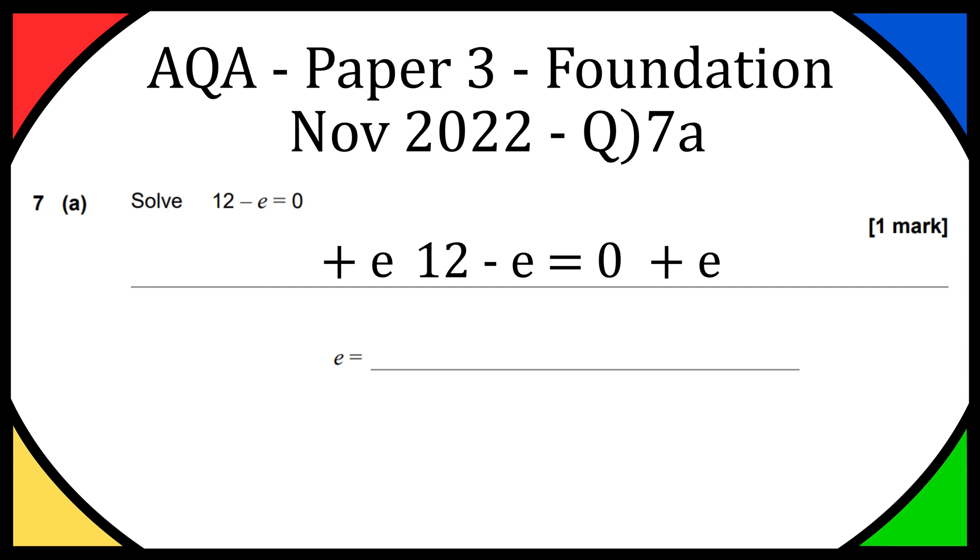Now on the left hand side these are going to cancel out because we have a plus e and minus e, so we're just going to be left with 12 on the left hand side and on the right hand side we just have 0 plus e.